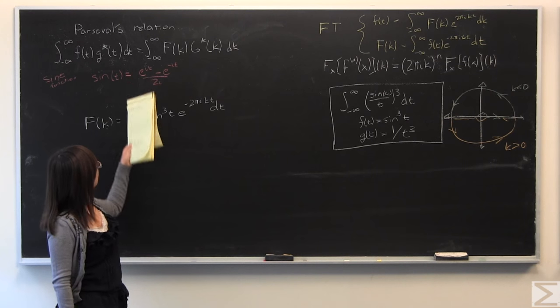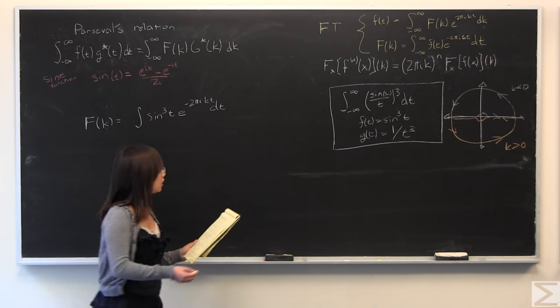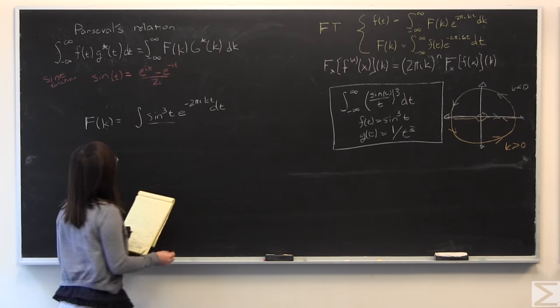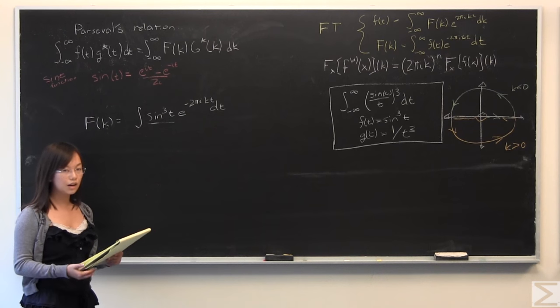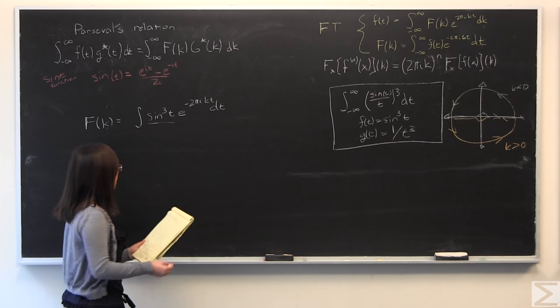So sine cubed of t, I have this very useful identity up there. And I'm going to just go along and turn this into this notation. I'm going to cube it and generally skip the gritty foiling steps.